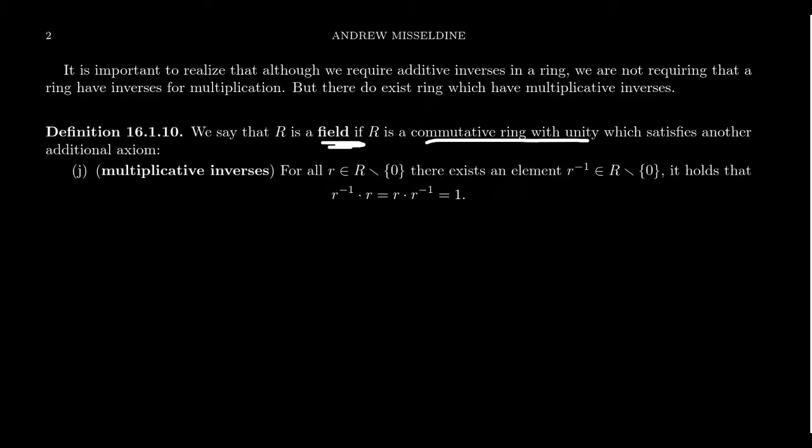And this final axiom is going to be the multiplicative inverse axiom. For which, if we take any non-zero number in the ring, so r cannot be zero, then it's guaranteed to have a multiplicative inverse, sometimes called the reciprocal of the element, such that r inverse r is equal to one, the unity of the ring. Or you get r times r inverse in that situation.